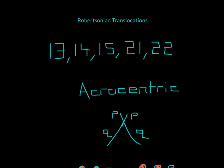This video is going to be over Robertsonian translocations. They usually occur between chromosomes 13, 14, 15, 21, and 22, and they happen between acrocentric chromosomes.